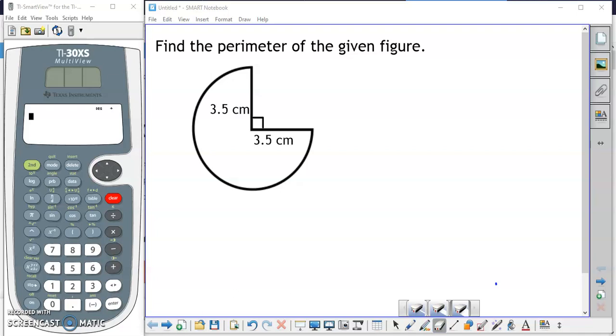We are going to start by determining how much of the circle is missing. A circle is formed by rotating the radius through a 360 degree angle. The angle of the missing portion is a right angle. That means that it is 90 degrees.